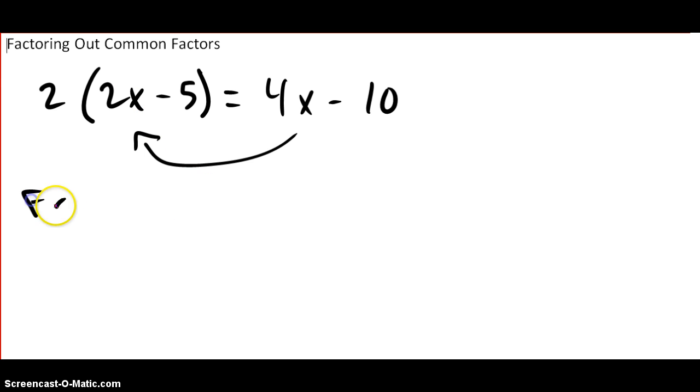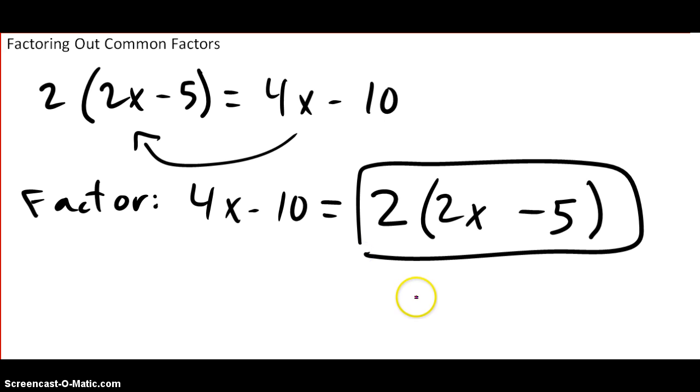So if the problem said factor 4x minus 10, you'd think, what is the biggest number that fits inside 4x and it fits inside negative 10. So you'd say, oh, it's 2. And you write parentheses, 2 times what is 4x? Well, 2 times 2x. 2 times what is negative 10? That would have to be negative 5. So that's factoring. And of course, the way to check factoring is to multiply. 2 times 2x is 4x. 2 times negative 5 is negative 10.